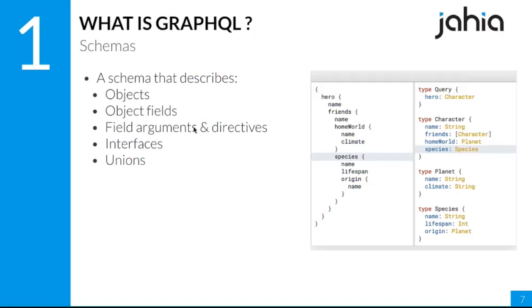Diving deeper: the schema is the first part I talked about. It specifies objects, object fields, arguments that you can have on fields, and directives, as well as things like interfaces, unions, and so forth. There aren't many different types of objects in the structure of GraphQL. Interfaces make it possible to say that an object complies with multiple different interfaces at the same time.